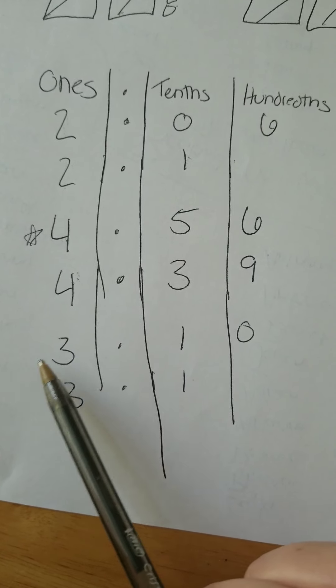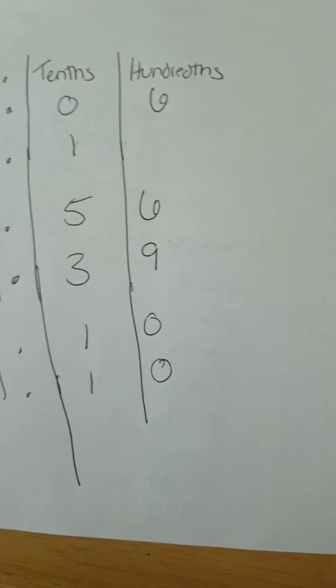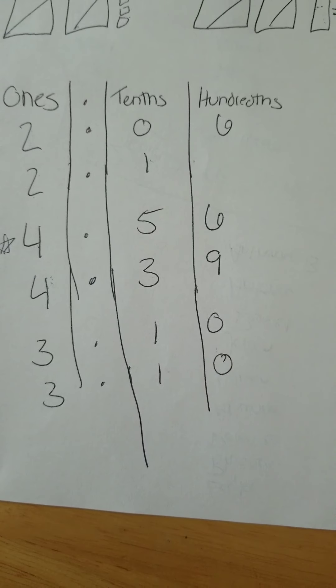I start all the way to the left. Three and three, they're the same. One and one, they're the same. Well, I've got nothing there. I mean, I could plug in a zero. It's not going to change the number. They're the same. All three place values are the same. Therefore, they are equal.